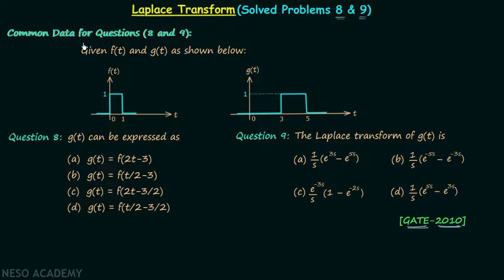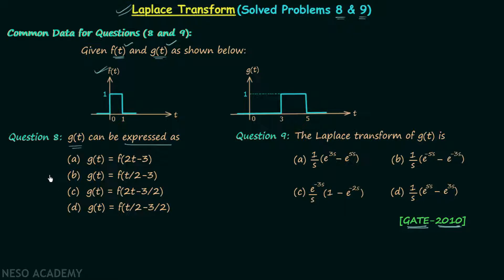According to the common data given, we have two time domain signals f(t) and g(t). f(t) is having the waveform like this and g(t) is having the waveform like this. In question number 8 we are required to express signal g(t) in terms of signal f(t). This question is not based on Laplace transform but is based on multiple transformations.